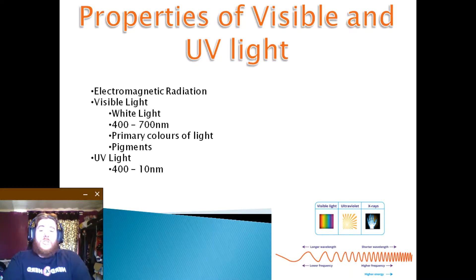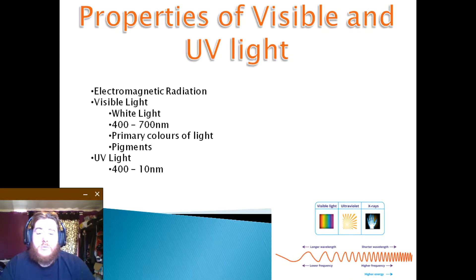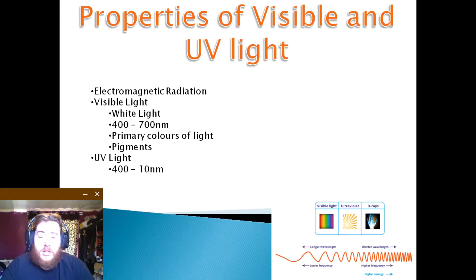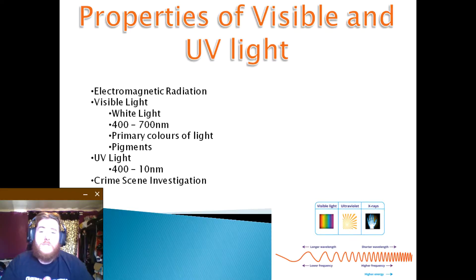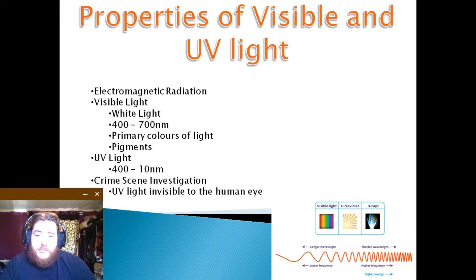Even though it is not possible to see ultraviolet light with the human eye, we are able to feel its effects. Some animals, however, are able to see it just as we see other colours in the spectrum, but human eyes have not evolved to that point. In respect of a crime scene investigation, ultraviolet light, though invisible to the human eye, its long wavelength band can be used as what is referred to as a black light.